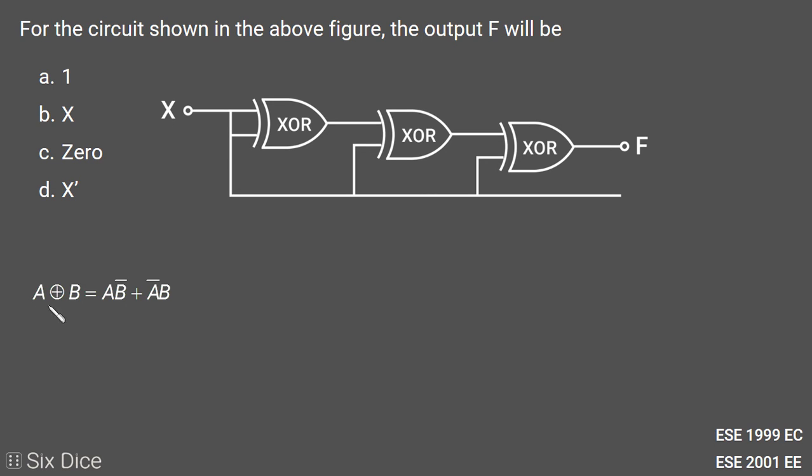Since both inputs are the same, it will become X⊕X = XX̄ + X̄X. Both are the same, X·X̄, so two X·X̄ becomes a single X·X̄.